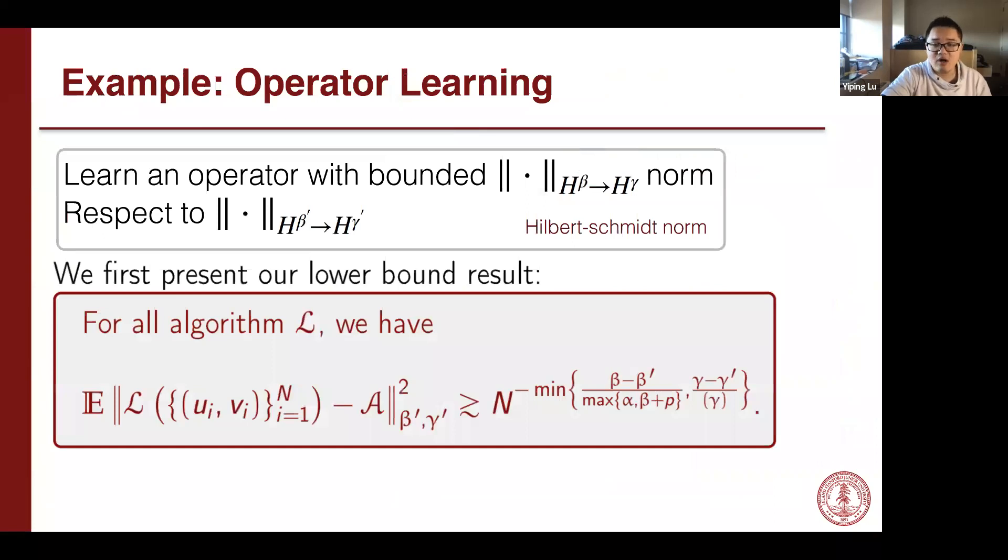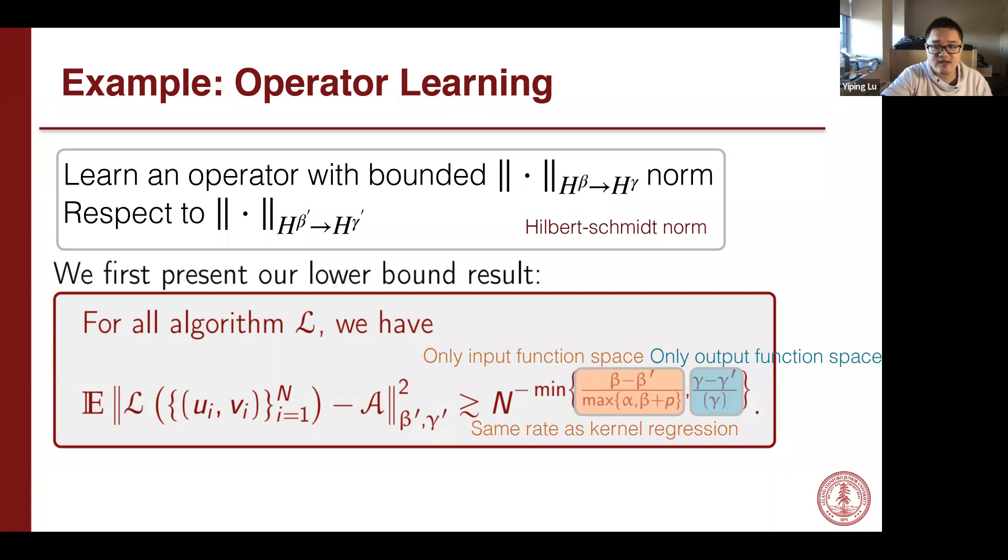We first write down our lower bound. The lower bound is very complicated, but let me introduce it to you. Our lower bound has a very good structure. It is a minimum of two rates. The first rate only depends on the beta, and the second rate only depends on the gamma. One rate only depends on the input space and another rate only depends on the output space. For the input space rate, you can see it is the same rate as kernel regression. It is the same rate as the literature I introduced that assumes finite variance in output space. So this rate is almost the same rate as the finite dimensional learning problem. But we have another rate that if you have an infinite dimensional problem, you may have a rate only depending on the infinite dimensional output.